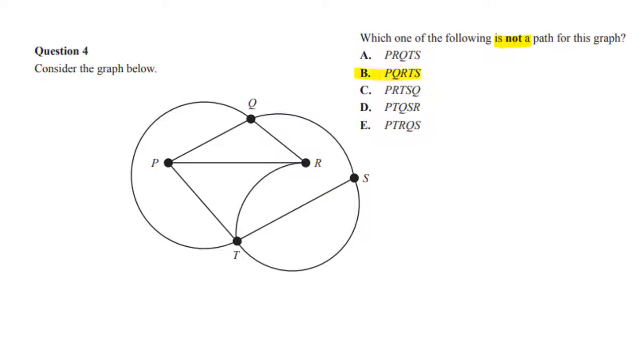Let's try the next one, so that's PQRTS. I can do that one. Option C is PRTSQ, so P-R-T-S-Q. I can do that one, so not that one.